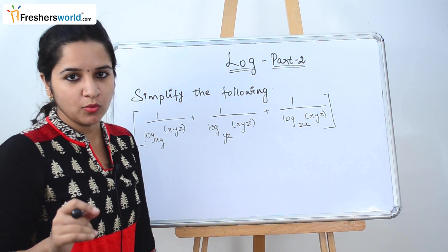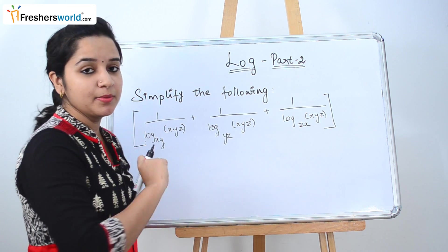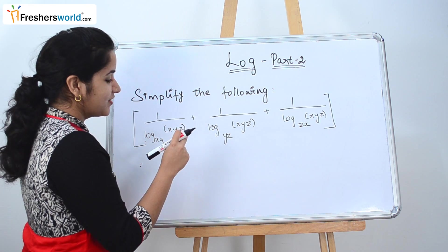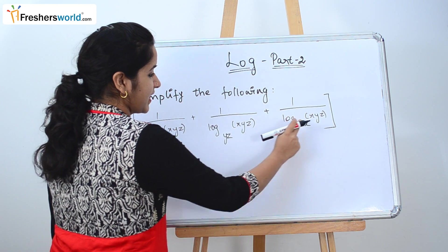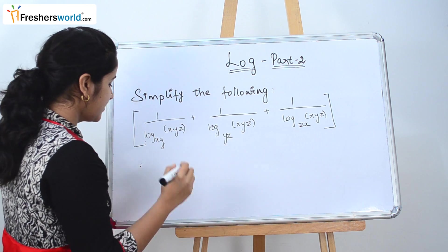So as we know the prime rule in log is to make sure all the bases are same. So that's what we are going to do. So once we take the denominator to the numerator we can see that xyz will become the common base. So let's just do that.